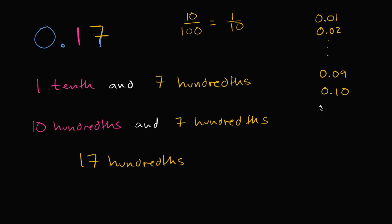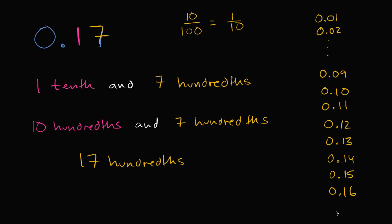Ten hundredths is the same thing as one tenth — the same way that ten ones is the same thing as one ten. But we could keep counting: ten hundredths, eleven hundredths, twelve hundredths, thirteen hundredths, fourteen hundredths, fifteen hundredths, sixteen hundredths, and then finally seventeen hundredths. So we can call this number — instead of zero point one seven or one tenth and seven hundredths — seventeen hundredths.